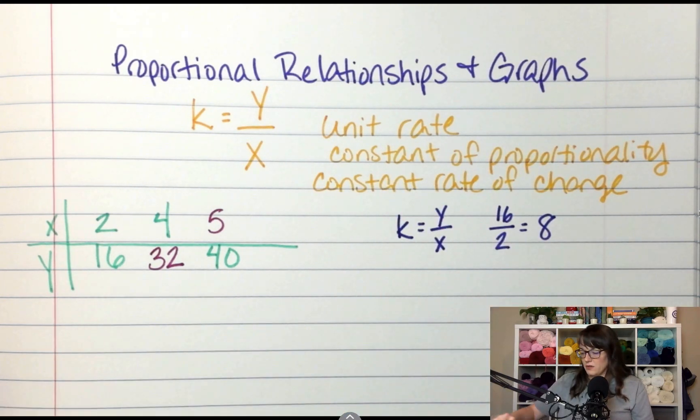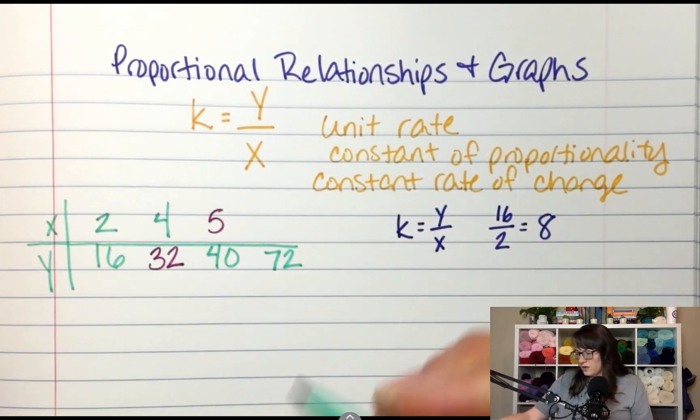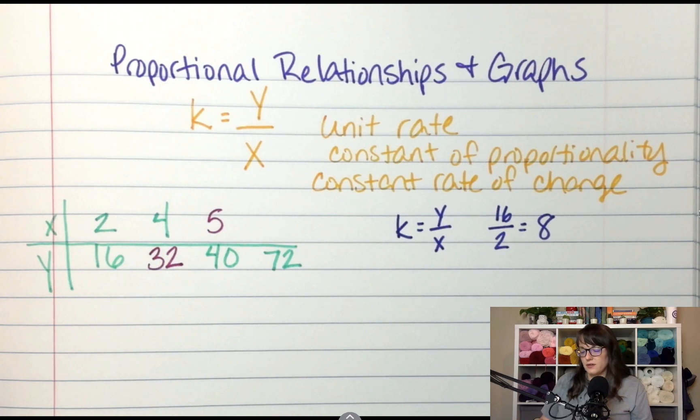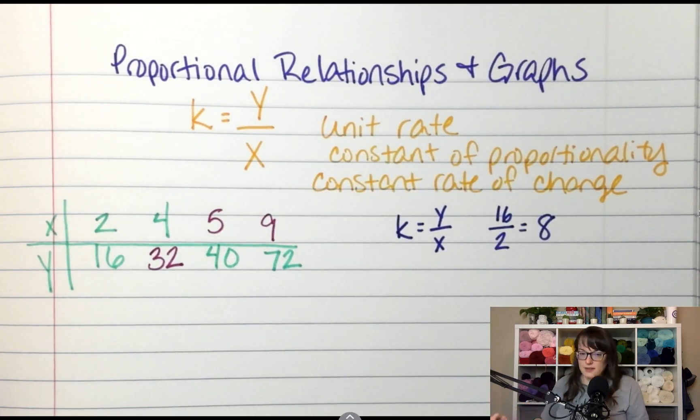What about 72? What if I put 72 right here? What is x? It would be 9 because 9 times 8 is 72.